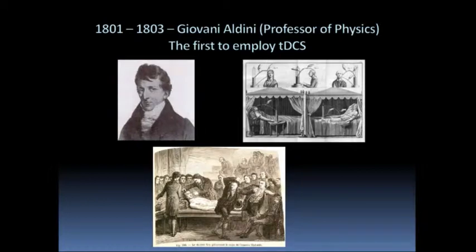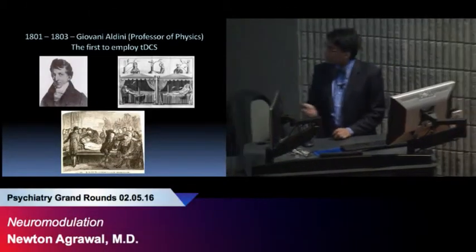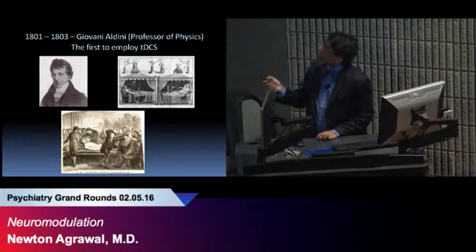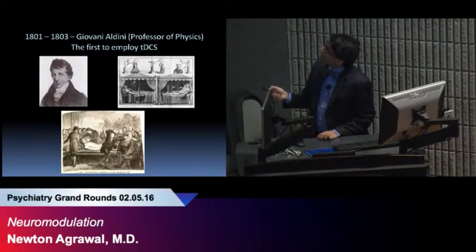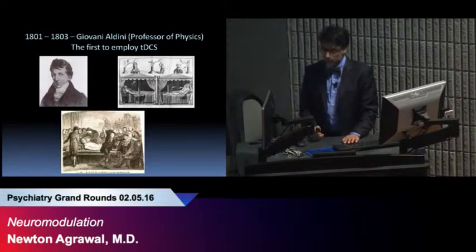Transcranial direct current stimulation is not new. It's a technique that's been around since at least the 1800s. This is a picture of Giovanni Aldani, an Italian professor of physics who was the first to employ using voltage stimulation to the head for treating melancholy. He was successfully able to treat melancholy in around 1801.